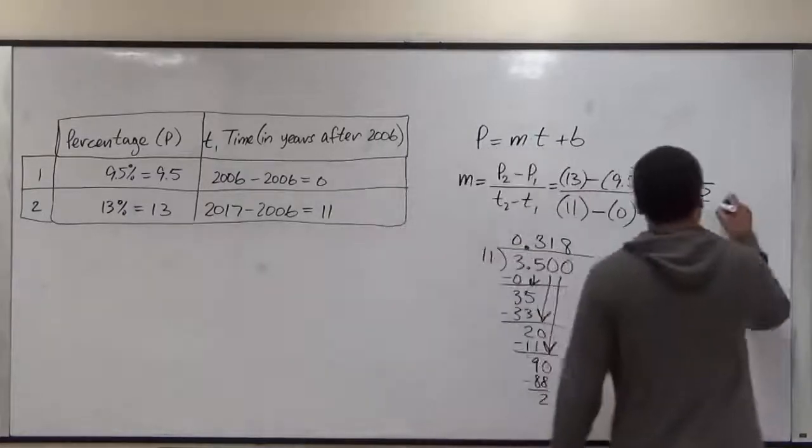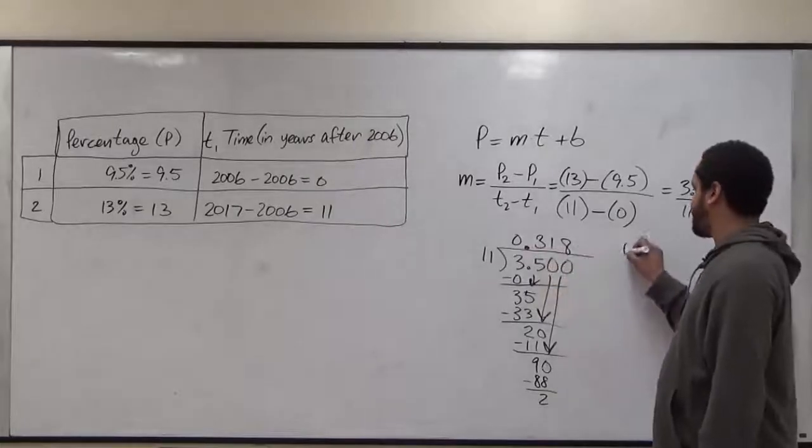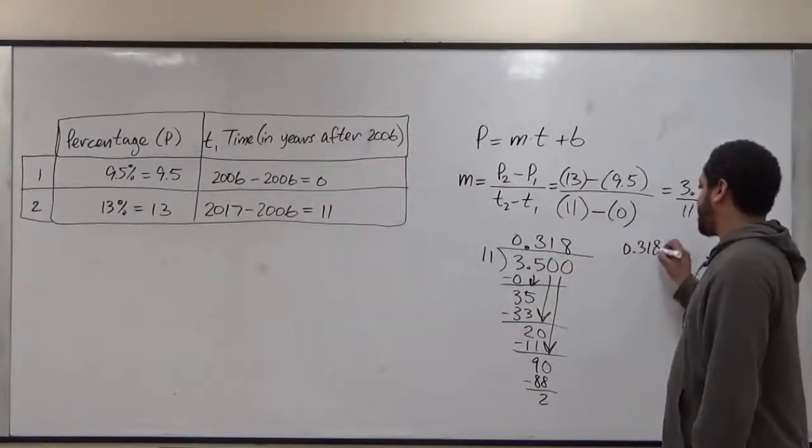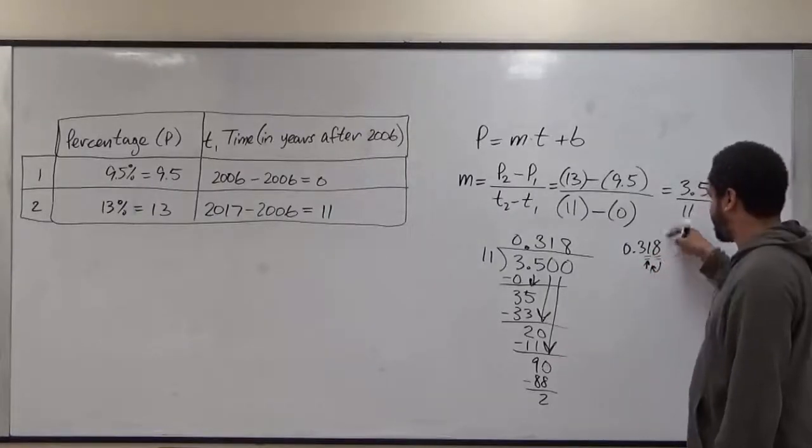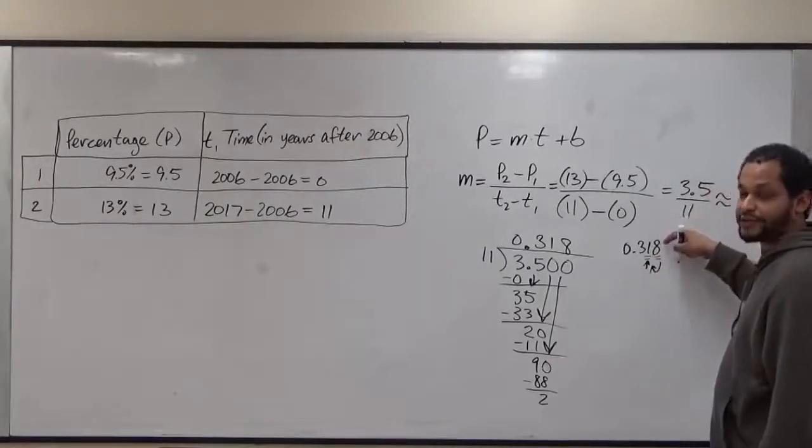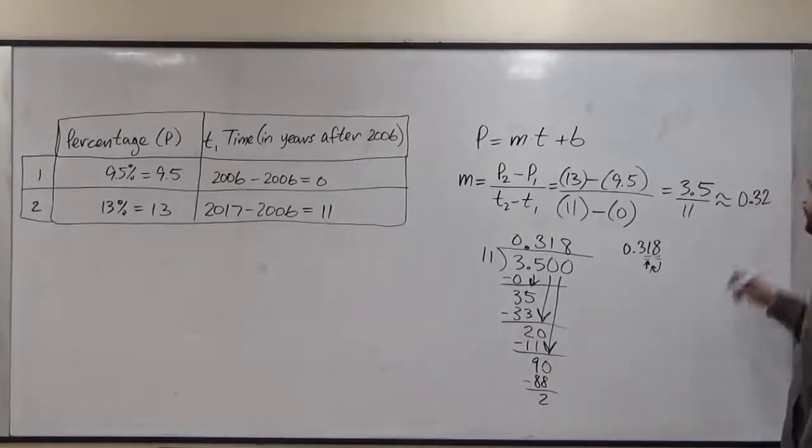This is approximately 0.318, which we round up to the nearest hundredth position. We want to round this digit. So we're going to use this one to round that one. Since this is greater than 5 or equal to it, this becomes a 2. So we have 0.32 for the slope.